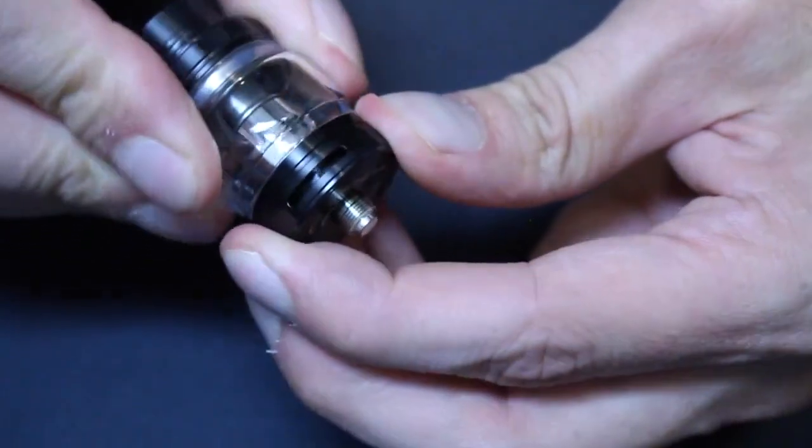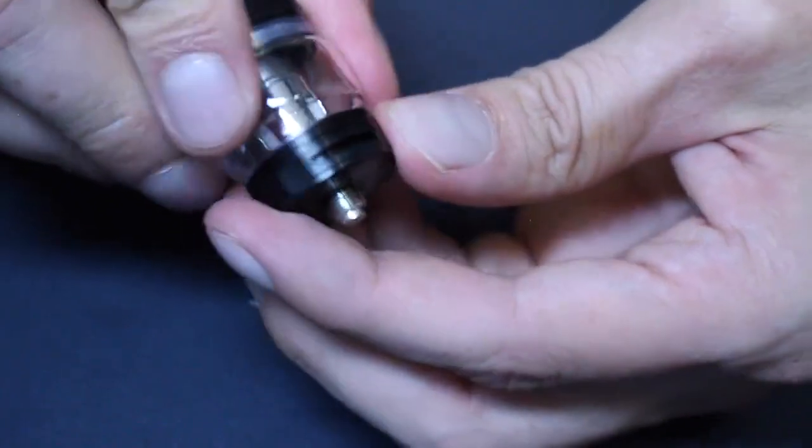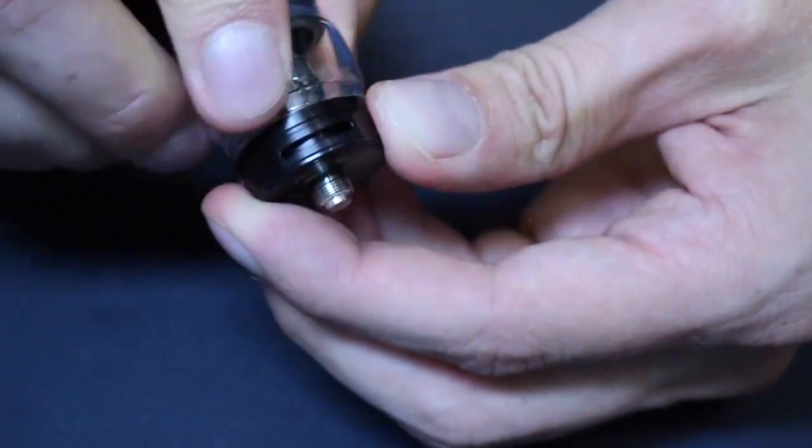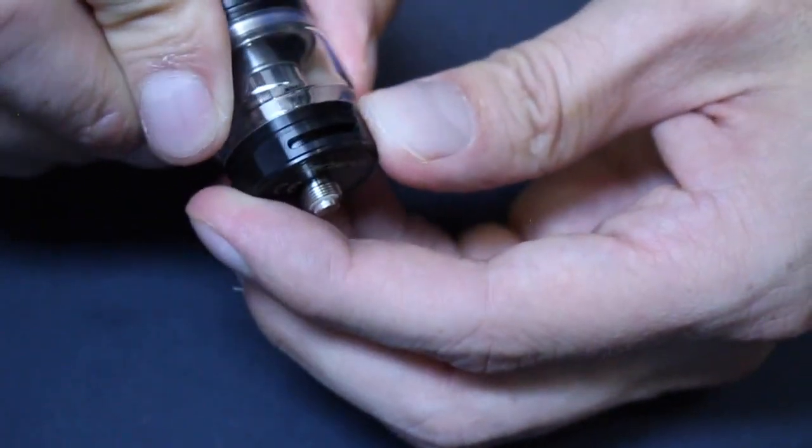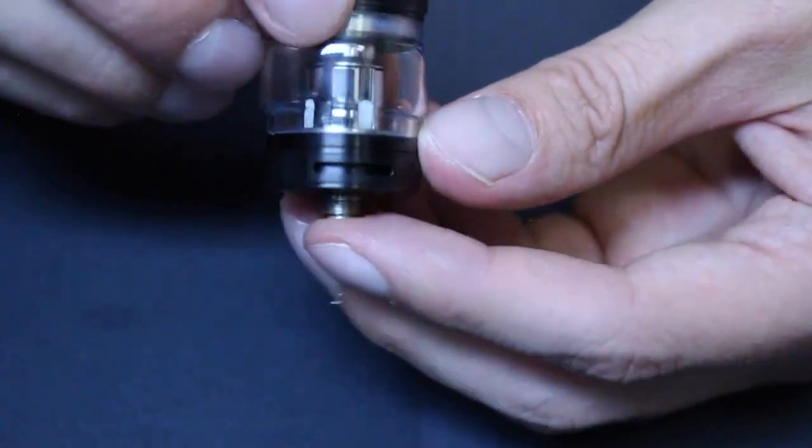The airflow control ring moves smoothly and stops in both directions. You can close it down pretty tight if you want a restricted lung draw, or you can open it wide open to get massive hits on the 90 watt coils. The airflow is a bit turbulent, which makes the tank a little noisy, but nothing too annoying.